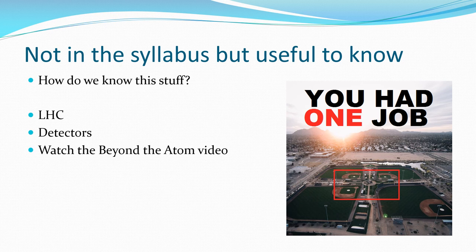All right. Just a little bit of extension. How do we know this stuff? How do we know this happens? Large Hadron Collider and other detectors. There's a little video out there called Beyond the Atom which gives you a bit more info. But we basically smash these particles together in these particle detectors like the Large Hadron Collider and we look for what particles come out of it.